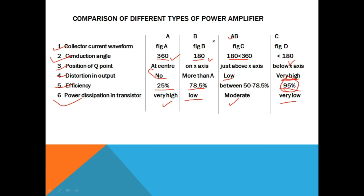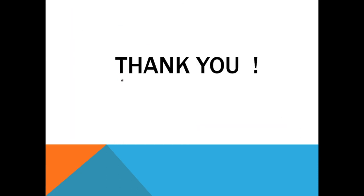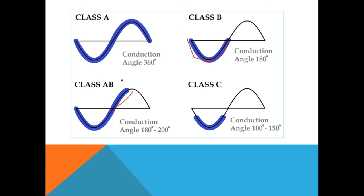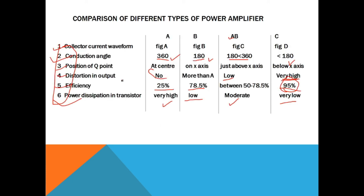This is the comparison of class A, class B, class AB, and class C power amplifiers on the basis of all these parameters. In this video, we have discussed the classification of power amplifiers as class A, class B, class AB, and class C, and compared all four types on the basis of different parameters. A likely exam question is: compare class A, class B, class AB, and class C types of power amplifier. So, thank you.